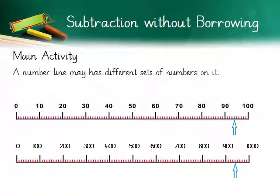A number line may have different sets of numbers on it. If you look at the given number lines, these are between 0 to 100 and 0 to 1000, and all the numbers on both number lines are at equal distance.